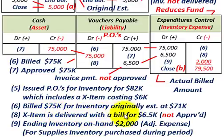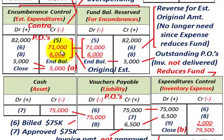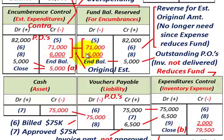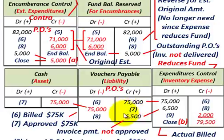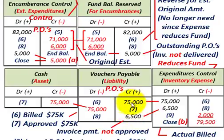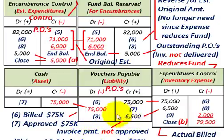There's a special item: it was delivered with a bill of $6,500, but not approved. We go back to our encumbrances control and reduce it by $6,000 — the original estimated cost — and reduce our fund balance reserved by $6,000. Then going to payables, we credit or increase our vouchers payable by the actual billed amount of $6,500, and debit our expenditures control for $6,500. But since the invoice payment is not approved, we cannot reduce our vouchers payable or reduce our cash until it is approved.